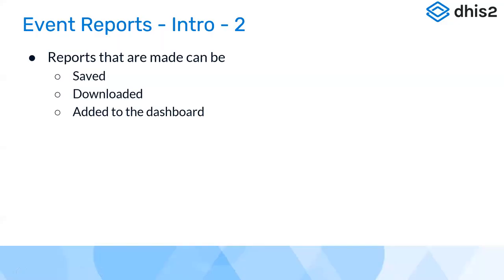The reports or tables created in event reports can be saved as a favorite, just like in pivot table. You can download them as CSV, Excel, or other formats, and you can also save them and add them to the DHIS2 dashboard. These are the three additional functions beyond visualizing within the event reports app.